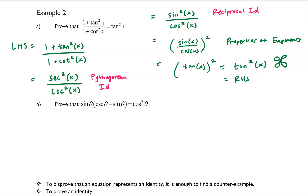Part B wants us to prove that sine of theta times cosecant of theta minus sine of theta is equal to cosine squared theta. There's not a whole lot we can do with the right-hand side of this equation, so let's go ahead and start with the left-hand side and rewrite it.